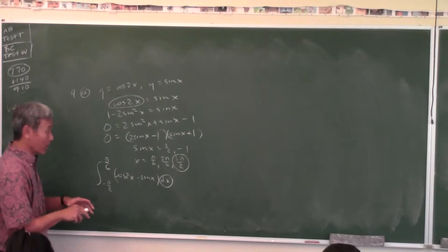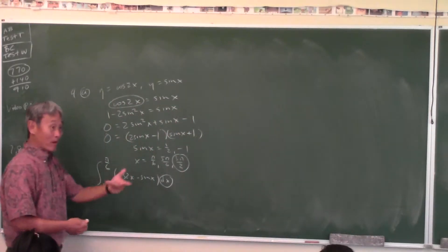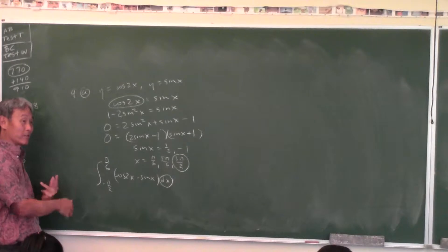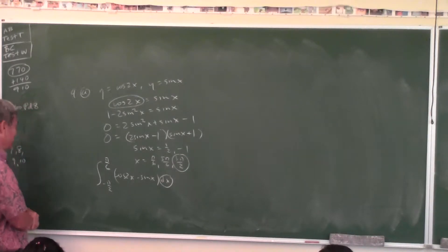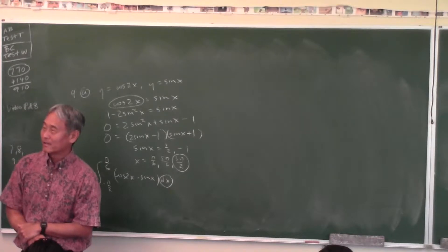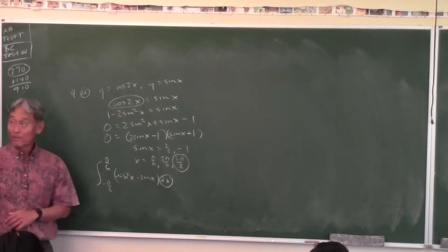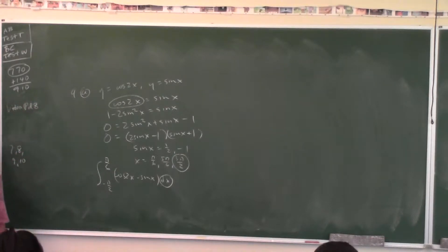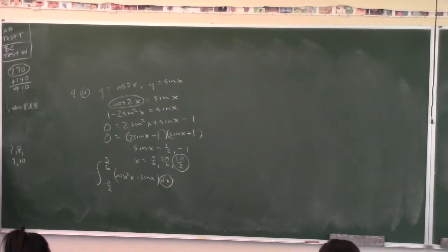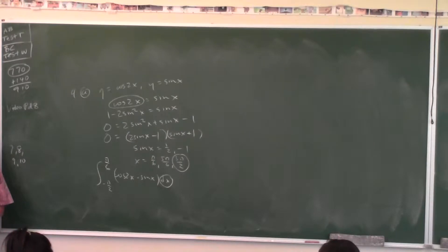You have to show your work. You get it right, you get the one point for the answer, but what about the one point for the integral? You're not going to get that one. Can everybody do number five? Because number five and number eight are the same problem, except number five you don't have a calculator, and number eight you will have a calculator. So you have to be able to do it both ways.